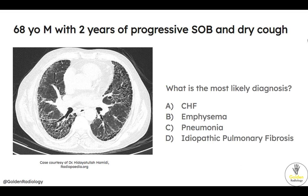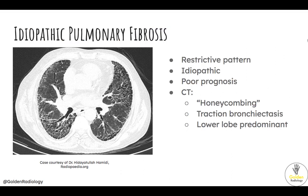Next question: 68-year-old male, 2 years of progressive shortness of breath and dry cough. What is the most likely diagnosis? This is idiopathic pulmonary fibrosis. The CT sign here is the classic honeycombing appearance, which most commonly occurs in the lower lobes in the periphery of the lungs, right abutting the pleura. You can also get traction bronchiectasis, where the bronchioles are dilated, caused by scarring and fibrosis of the destroyed lung parenchyma tugging on the bronchioles. Idiopathic pulmonary fibrosis will have a restrictive pattern on PFTs and is associated with a poor prognosis.